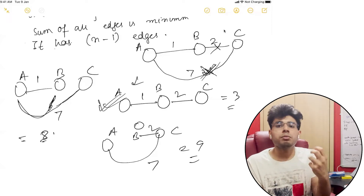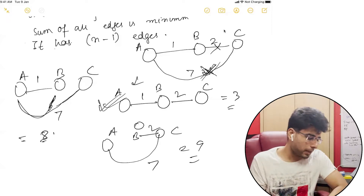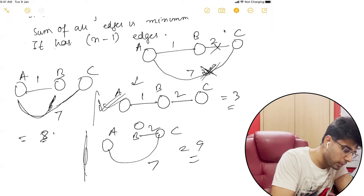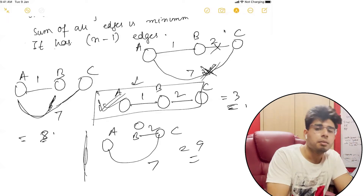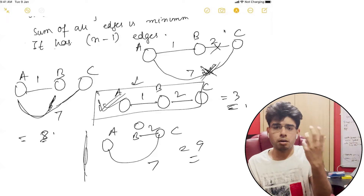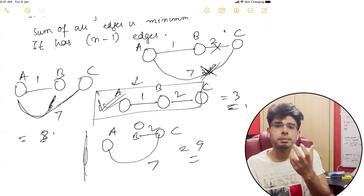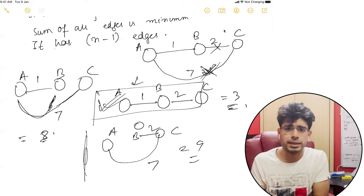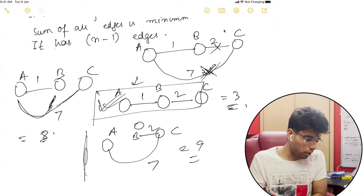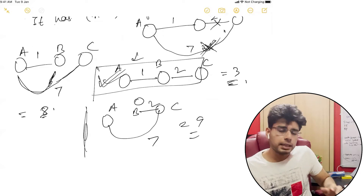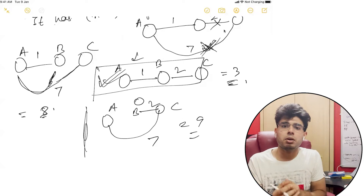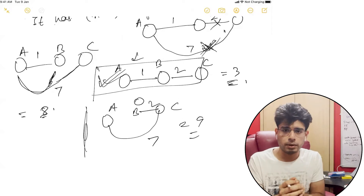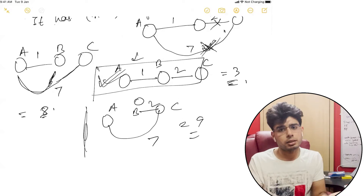Now, how do we come up with this minimum spanning tree? We can see that this is the minimal spanning tree, and this is the minimum weight — the MST weight. Kruskal's algorithm will give you the minimum spanning weight, and you can also get the tree itself.